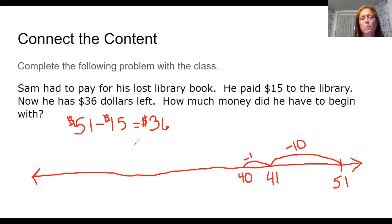And then I still have four more to subtract because this is only 11 and I need 15. So if I subtract four from 40, I get 36. So my answer of 51 minus 15 equals 36 is correct. $51 is the amount that Sam started with before he had to pay for his lost book.